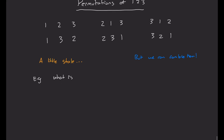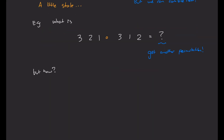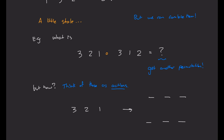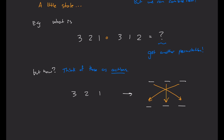For example, if I take the permutation (3, 2, 1), I can compose it with the permutation (3, 1, 2) and get another permutation. The key is to think of these as actions. So instead of thinking of a permutation as some fixed static object, I can think of it as an action of rearrangement. Once I consider them this way, multiplication just becomes composing their actions.